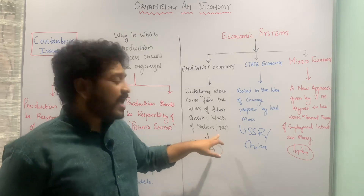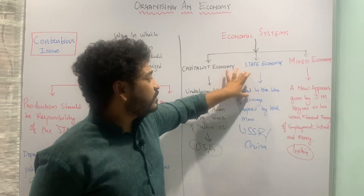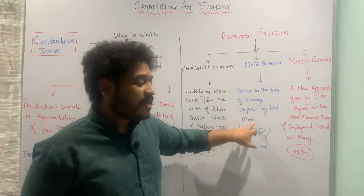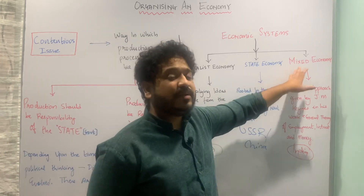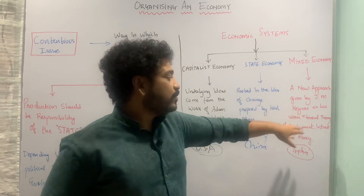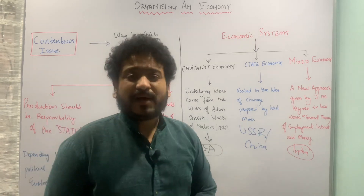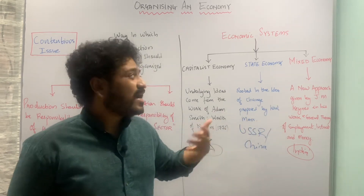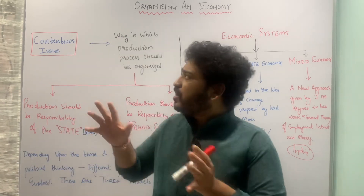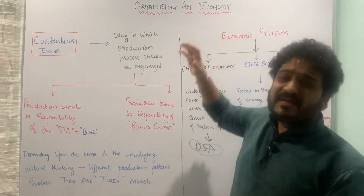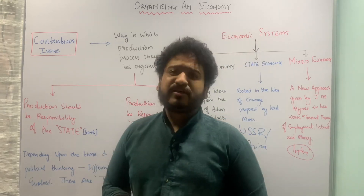The capitalist economy was proposed by Adam Smith in 'An Enquiry into the Nature and Causes of the Wealth of Nations' (1776); the United States of America is a prime example. The state economy concept came from Karl Marx, with the erstwhile USSR and China as examples. The mixed economy idea came from John Maynard Keynes's 'The General Theory of Employment, Interest and Money,' and India is a good example. In the next lectures, these systems will be discussed in greater detail.